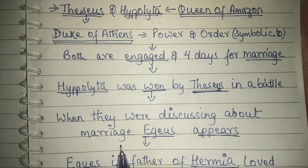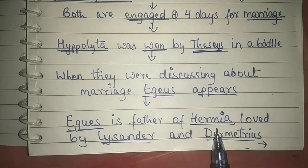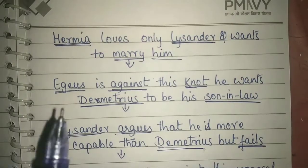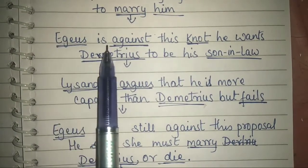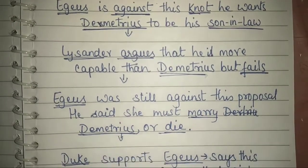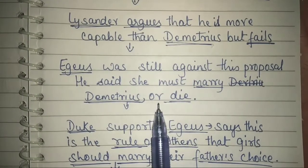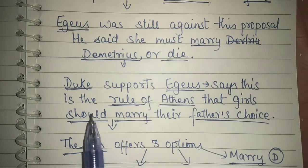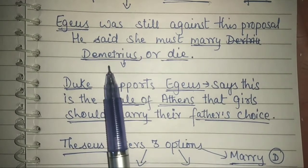When they were discussing about their marriage, Aegeus appears. Aegeus is the father of Hermia, and Hermia is loved by both Lysander and Demetrius, whereas Hermia loves only Lysander and wants to marry him. Aegeus is against this and wants Demetrius to be his son-in-law. Lysander argues he is more capable than Demetrius, but Aegeus tells his daughter she must marry Demetrius or she will be killed. Here, the father's choice was Demetrius.